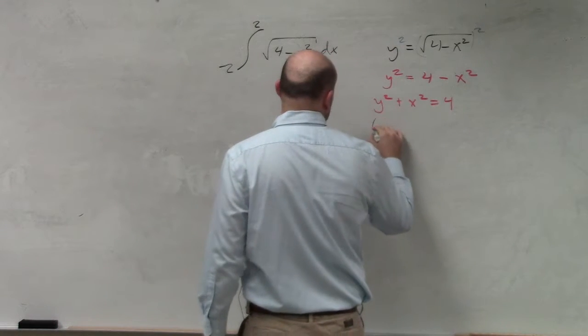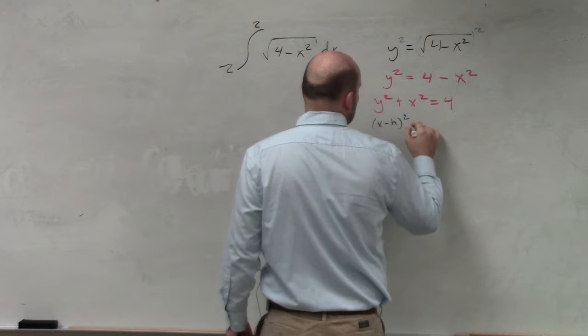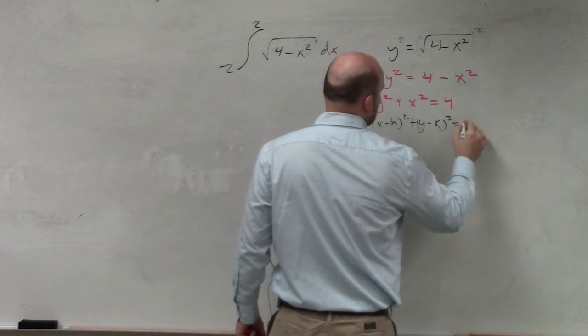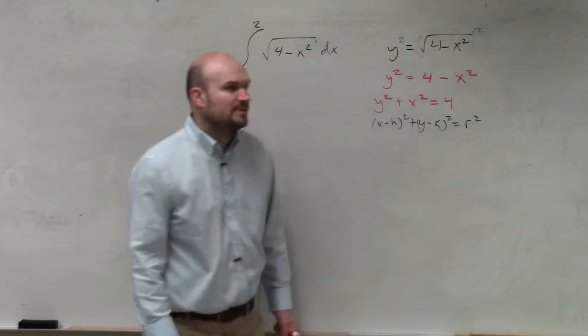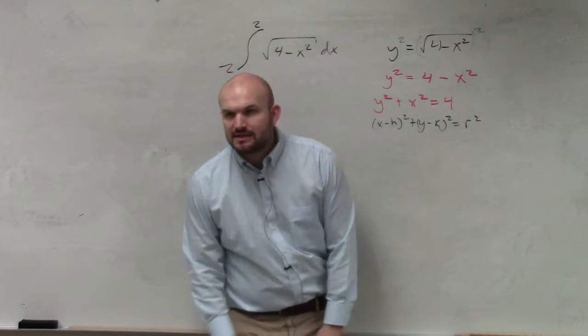Just a little FYI, x minus h squared plus y minus k squared equals r squared. That was the formula for the circle, if you guys remember that.